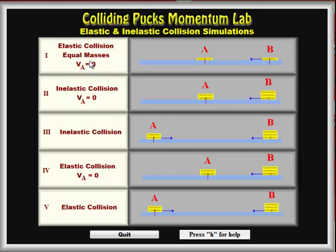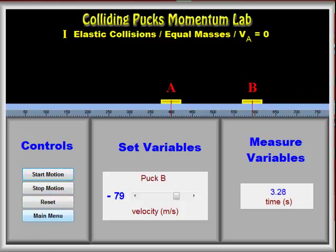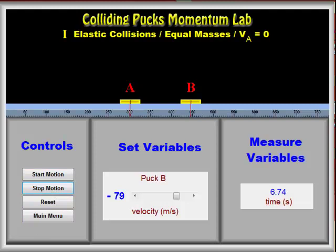Let's take a look at the first simulation. You can see here we have a single puck that is at zero velocity. Puck B will be coming in from the left. We can start the motion and stop the motion at any time, and then the pucks collide. In order to solve the momentum equation, students will have to measure both the velocity and mass of the puck or pucks after the collision. They will know all of the information about the pucks before the collision, so there is nothing to measure.